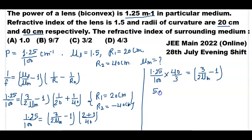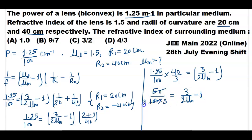This value becomes 50/100 into 3 equals (3/2) into (refractive index of medium minus 1). Dividing 100 by 50 gives 2, so this becomes 1 divided by (2 into 3) = 1/6, equals (3/2) into (refractive index of medium minus 1).